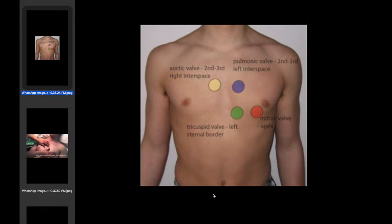Jugular venous pressure can be detected by putting the patient at 45 degrees. If it is not easily detectable, we can perform a hepatojugular pressure to detect the upper limit of the jugular venous pressure.